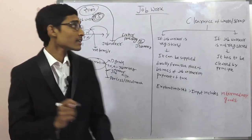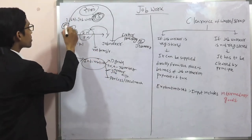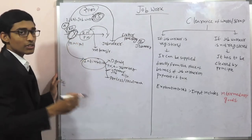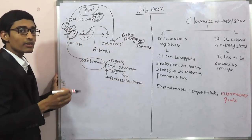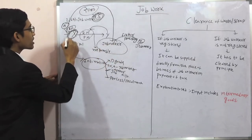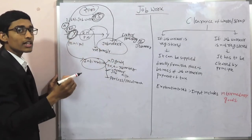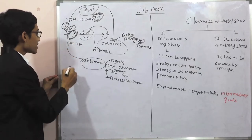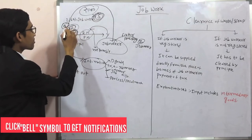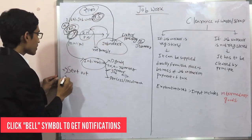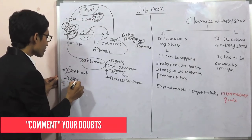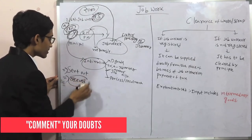If the goods are directly sent by the supplier to the job worker without bringing them to the premises of the principal, then this 1 year or 3 years have to be counted from the date when they are received by the job worker. If they are sent by the principal, they have to be counted from the date when they are sent out. If the supplier is directly sending to the job worker, this 1 year or 3 years have to be counted from the date when they are received by the job worker.